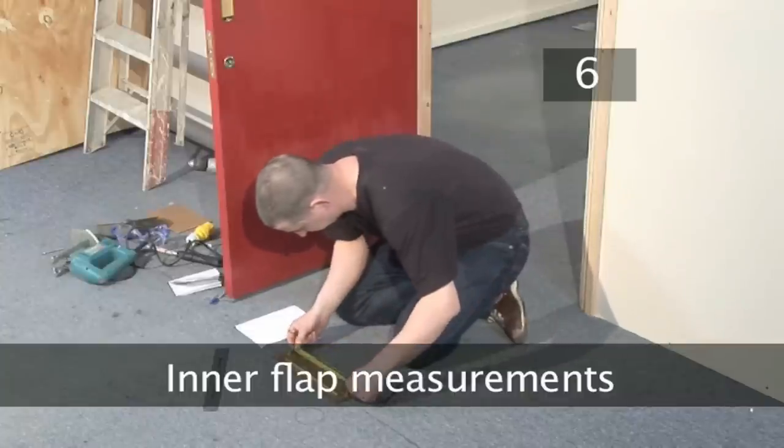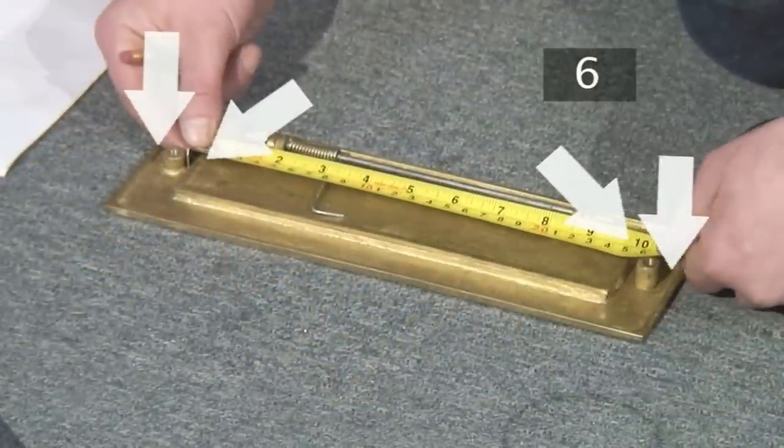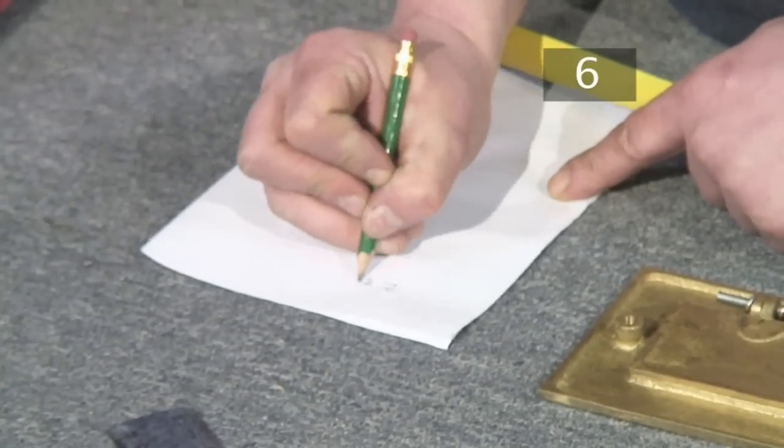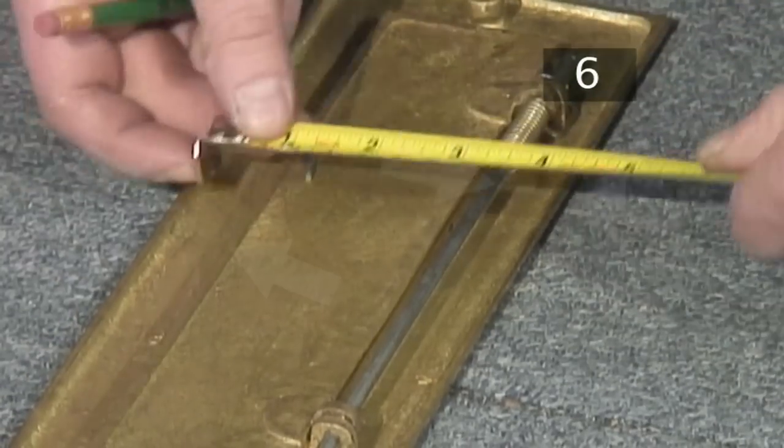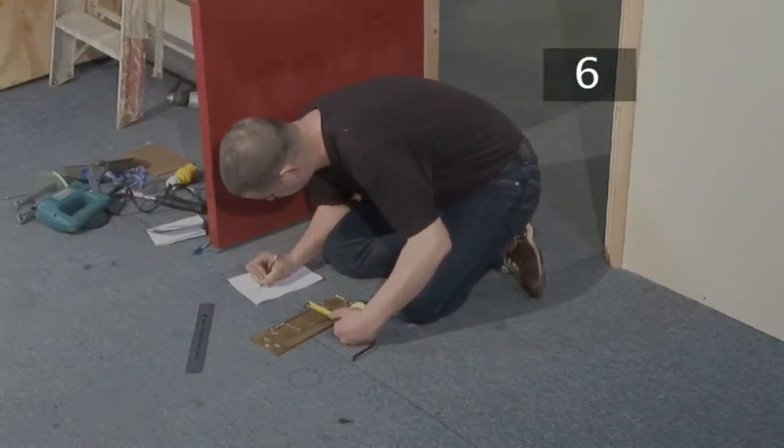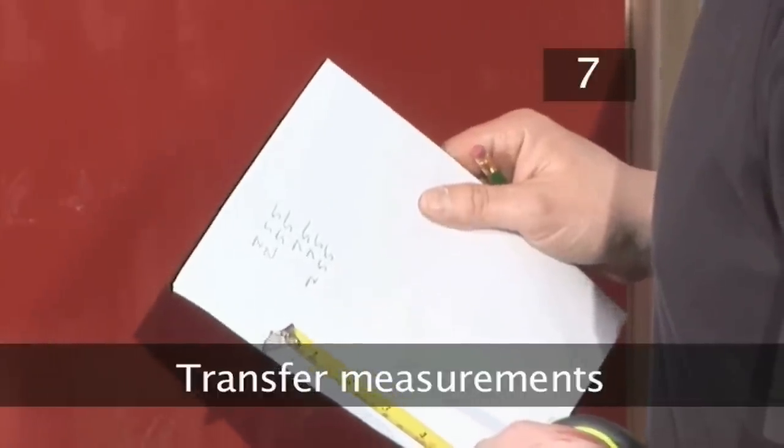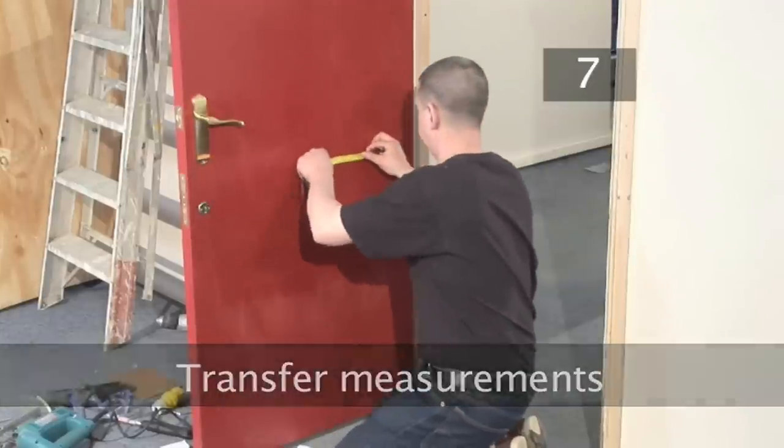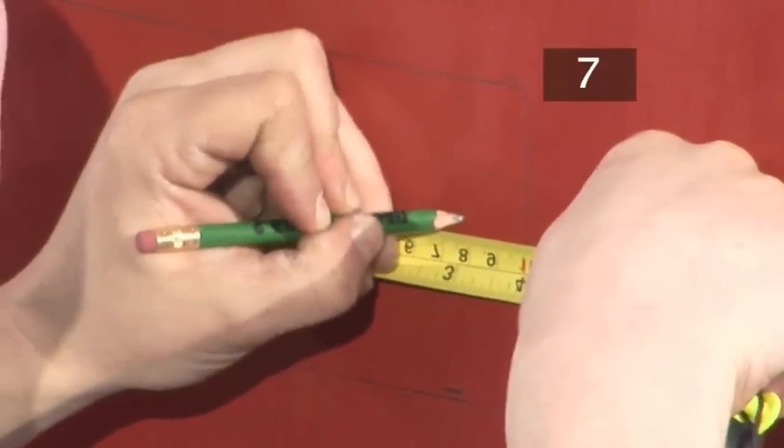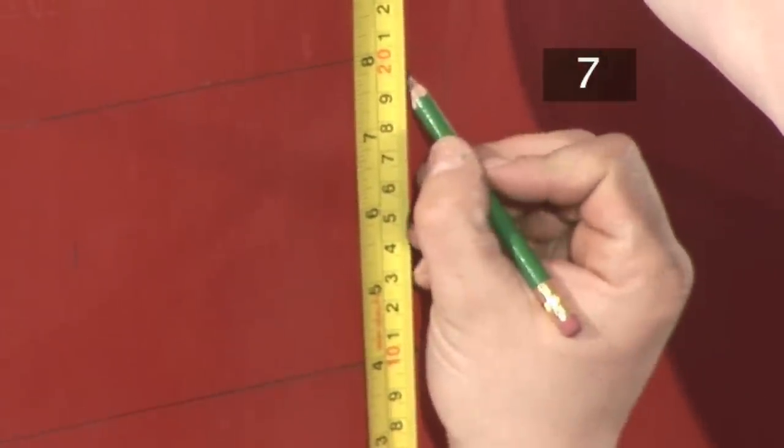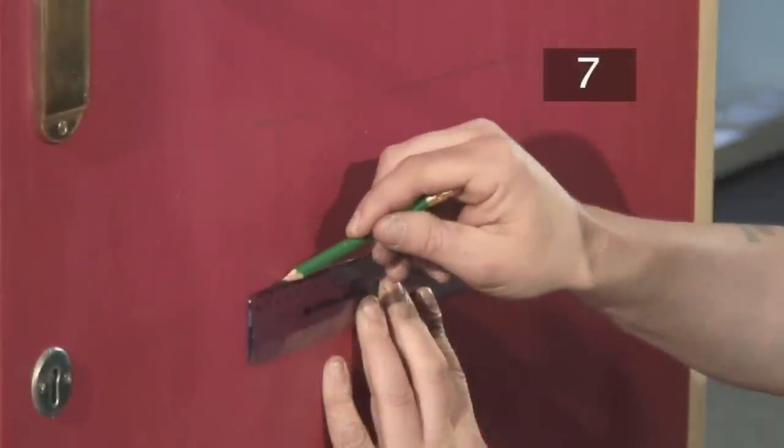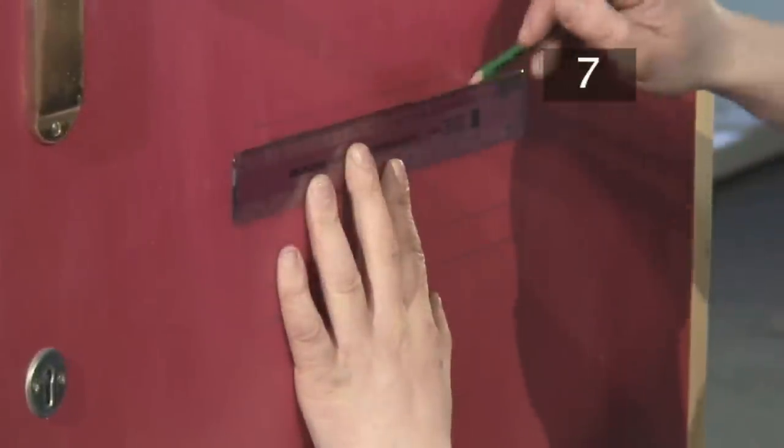Step 6. Inner flap measurements. Measure the distance between the edge of the letterbox and the top, bottom and sides of the inner flap. Make a note of these. Step 7. Transfer flap measurements. Carefully transfer these measurements to the door. Use a pencil and ruler to join your pencil marks so that the inner flap and its position are now clearly outlined on the door.